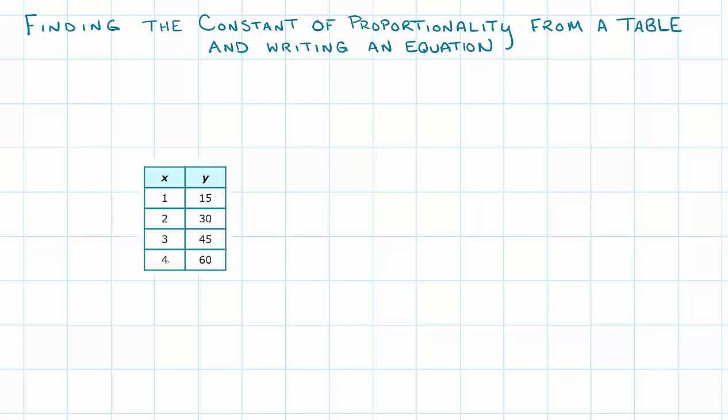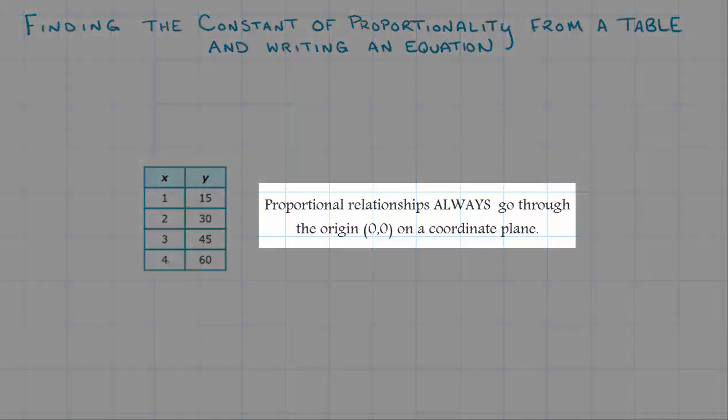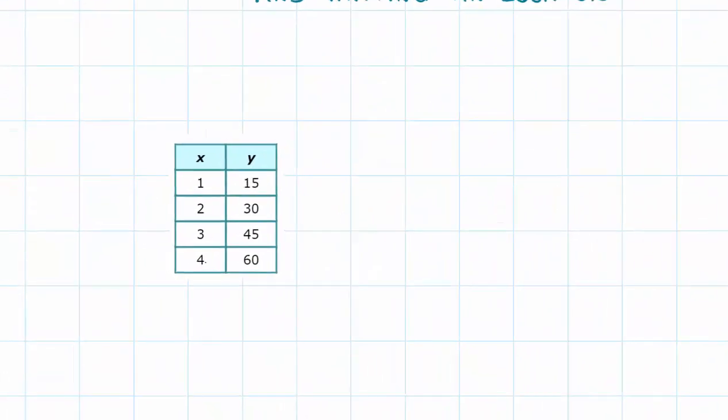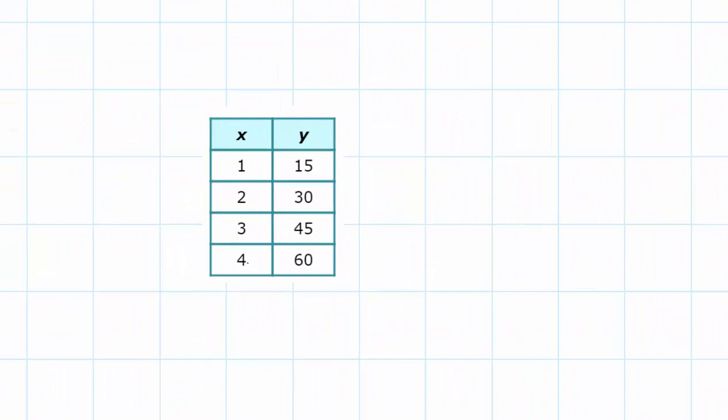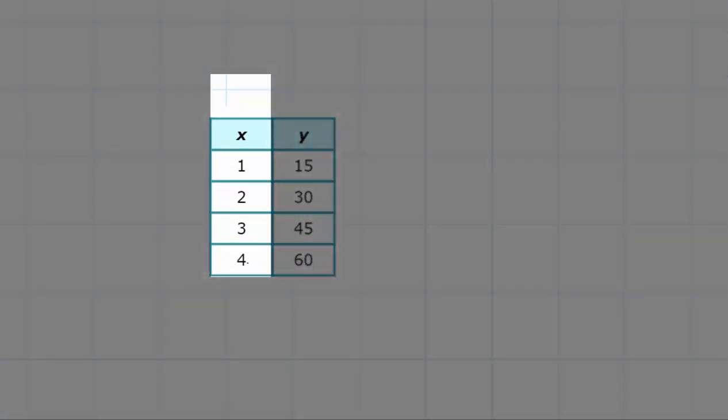Let's start with my strategy. The first thing that we have to understand with a proportional relationship is that it will always start at the origin, at zero. What you want to do is look at your table and count backwards from the numbers they gave you. In my x column, I have 4, 3, 2, 1. I'm counting backwards by ones, so the next number after 1 would be 0.